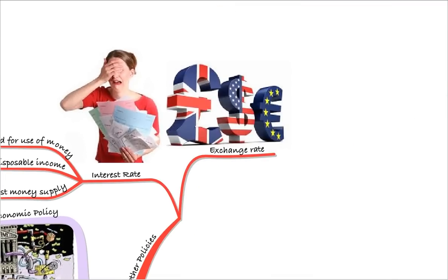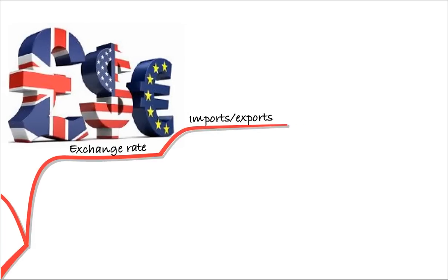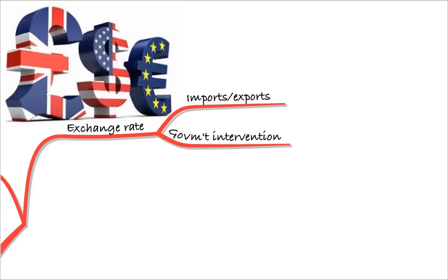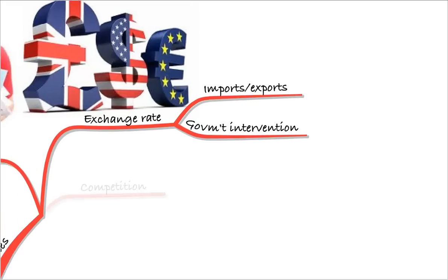The exchange rate is another area in which policy makers may intervene. We're thinking here about the price of imports and exports. There may be government intervention in exchange rates — buying or selling the currency to try to devalue or maintain the value of the currency. China is a particular example of a country that does this quite often.